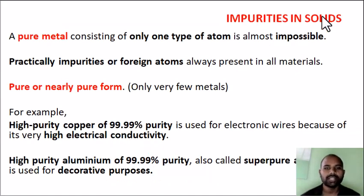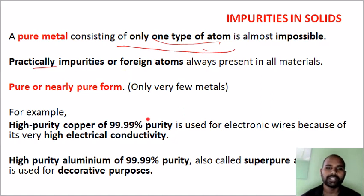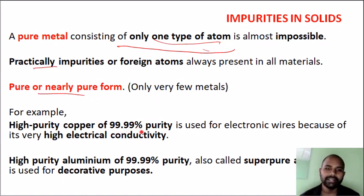Let's see what the impurity of pure metal is. The pure metal is the metal which consists of only one type of atom. That is pure metal. But it is impossible to achieve perfectly. There are some impurities, foreign atoms. Maximum purity is considered pure. For example, high purity copper — high purity copper is 99.9% copper.